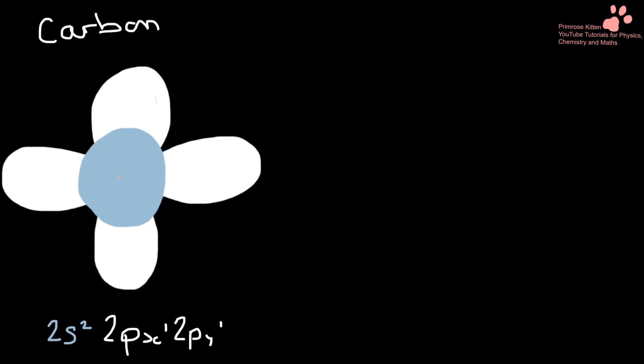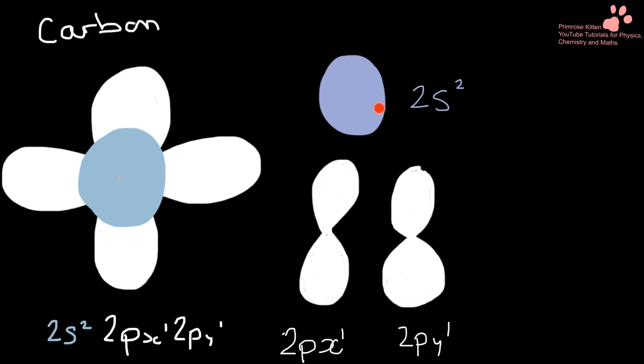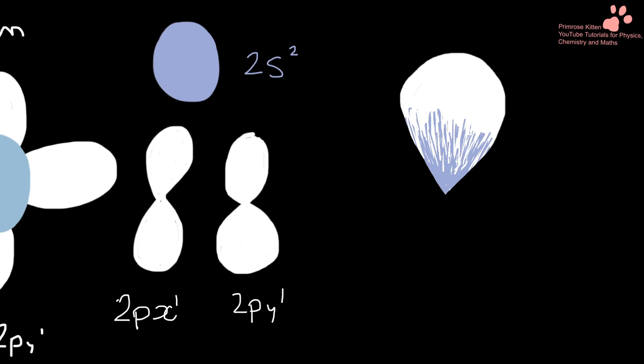Looking at the orbitals that carbon has, we have our 2s and then our 2p orbitals, two electrons in the 2s, an electron in the 2px, an electron in the 2py. When we excite an electron from the 2s up to the 2p, we get hybrid orbitals.